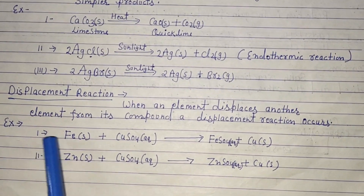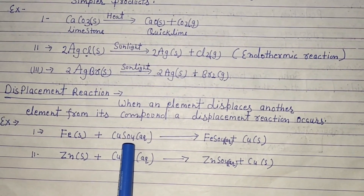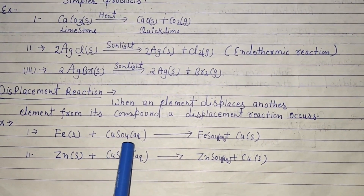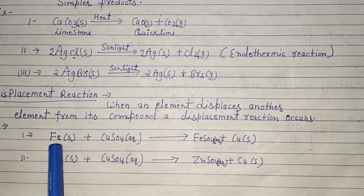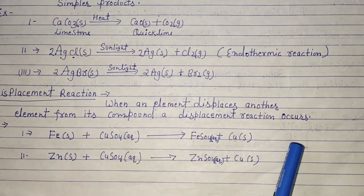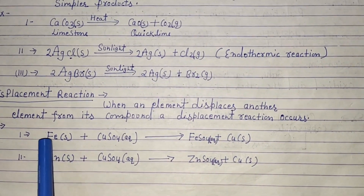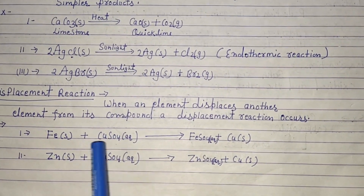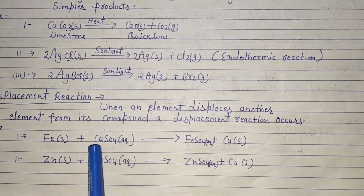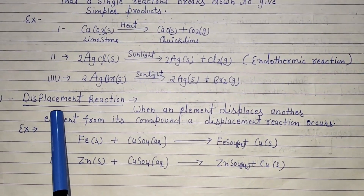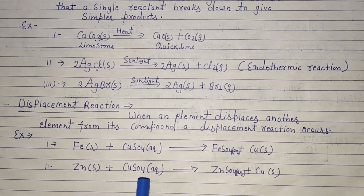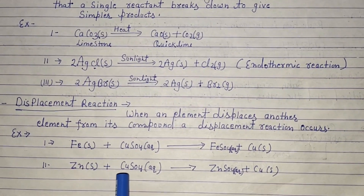For example: iron plus copper sulfate gives iron sulfate plus copper. Iron displaces copper from the compound, so iron sulfate is formed and copper is displaced. When one element displaces another element, this reaction is called a displacement reaction. Next: zinc plus copper sulfate — zinc is the first element and copper is displaced.